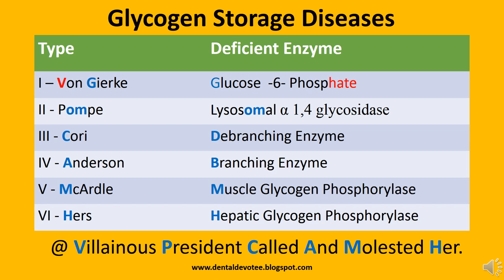These six different glycogen storage diseases can be memorized easily in sequence by the mnemonic: 'Villainous President Called And Molested Her.' Villainous for Von Gierke, President for Pompe, Called for Cori, And for Anderson, Molested for McArdle, and Her for Hers type 6.